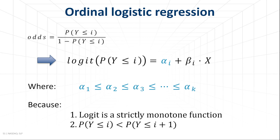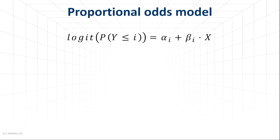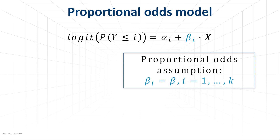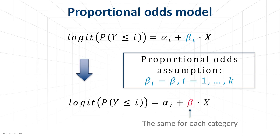For example, the probability to have pain level poor or fair is always lower than the probability to feel poor, fair, or moderate pain. To simplify this model, a very common approach is to use the proportional odds model, which assumes that the effect of the explanatory variable is the same for all categories. In other words, the beta parameters are the same for each category, so beta_i equals beta.